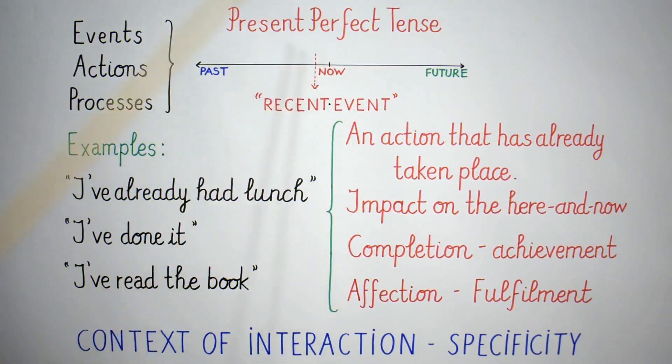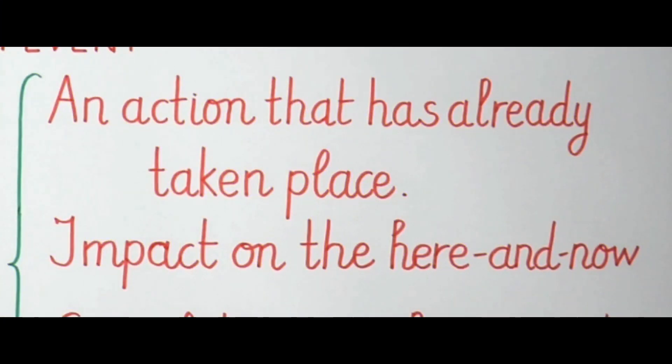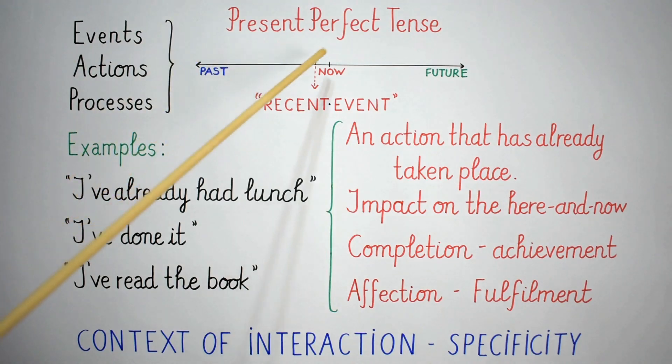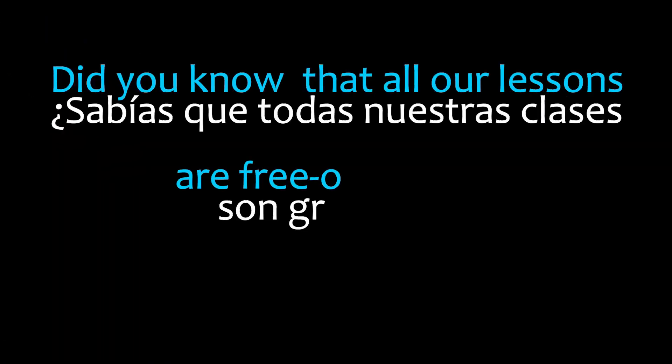The present. Una acción ha tomado lugar, el almuerzo, y esto tiene un impacto en el aquí y el ahora. Lo que es importante señalar es la conexión que existe entre lo que ha sucedido por un lado y cómo esta acción afecta el aquí y el ahora del habla, el presente.